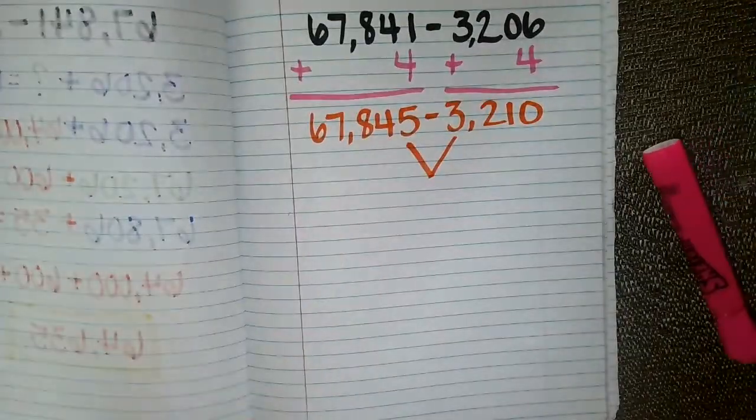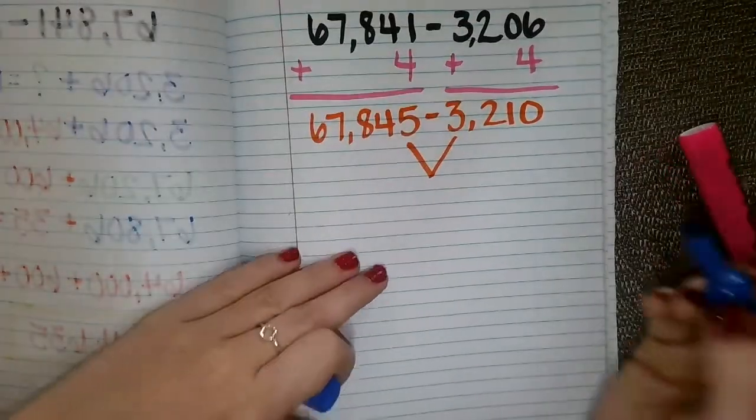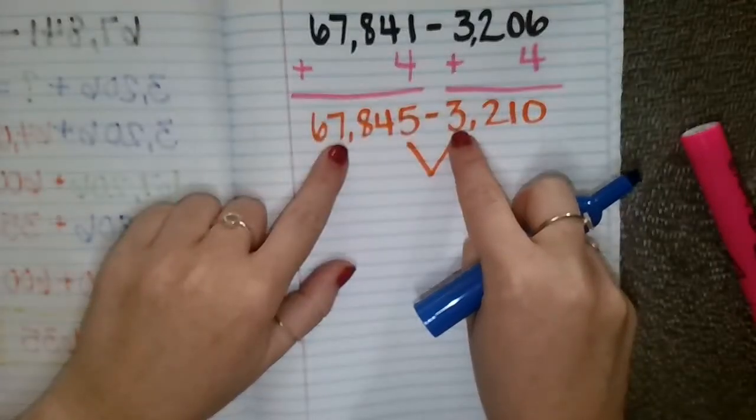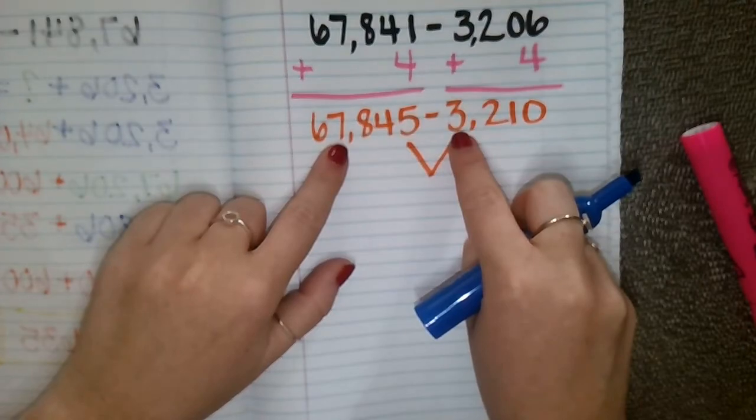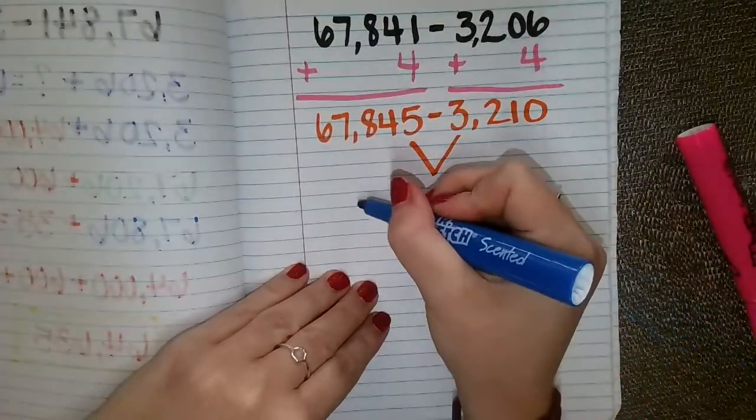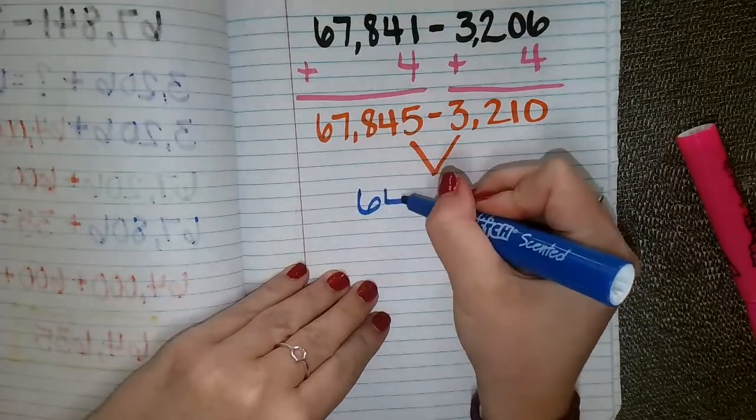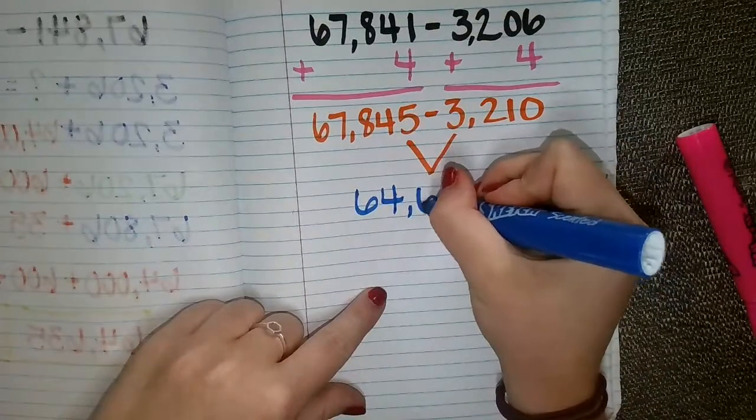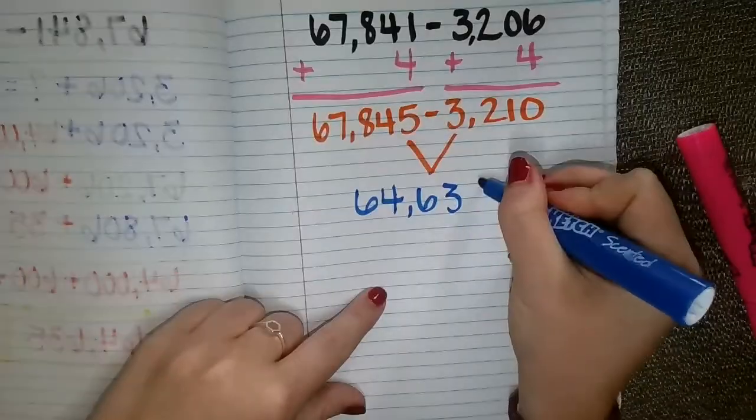So when I subtract 67,845, if I just kind of look in my place value still, kind of working with that place value strategy that we talked about in the last practice, we are going to have 64,635.